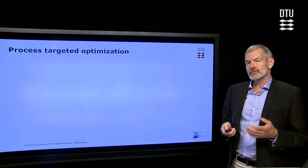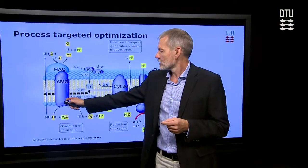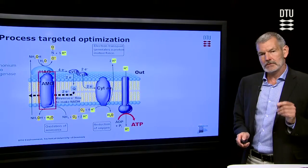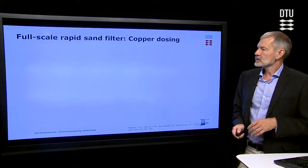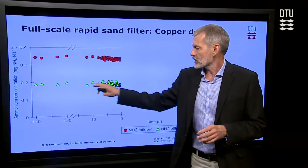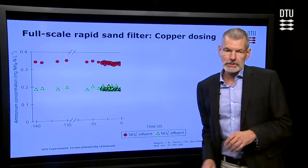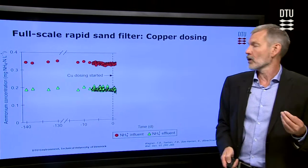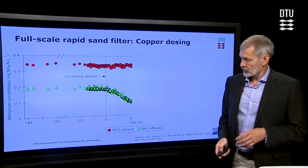What if we took a smarter approach and looked at the processes? We know that bacteria are involved and that enzymes are essential. If we look at one of the essential enzymes — the ammonium monooxygenase — we know that copper is an essential metal in the construction of that enzyme. So what if we actually add copper to the filter? Could that be a way to stimulate the filters? We did that in a full-scale filter and followed the effluent concentration over a period of time. When we added copper — just one microgram of copper per liter — we could see an immediate effect: within a week, we had a substantial removal and the effluent concentration was going down.